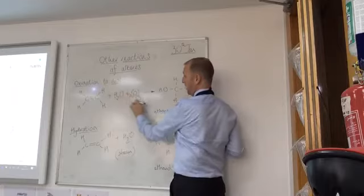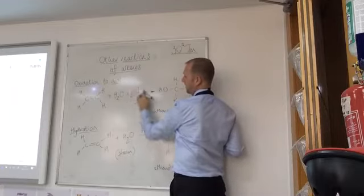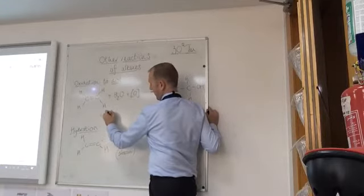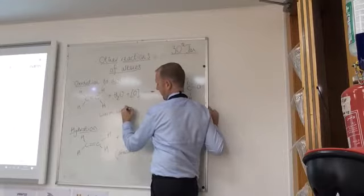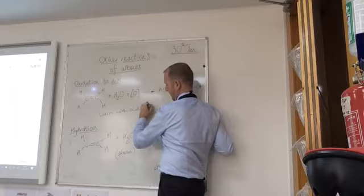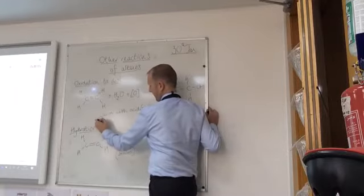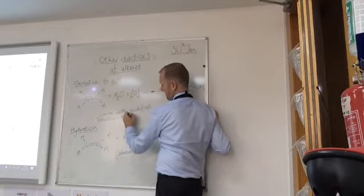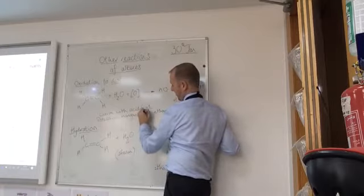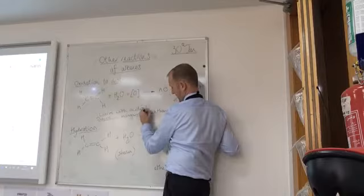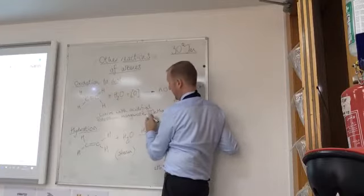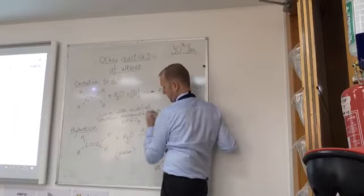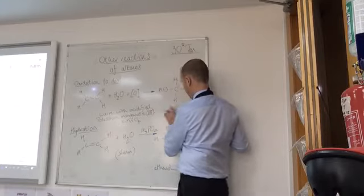To make this reaction happen, to provide this extra bit of oxygen, we use, or we warm it, with acidified potassium manganate. In fact potassium manganate(VII), which is KMnO4.